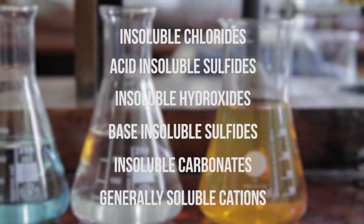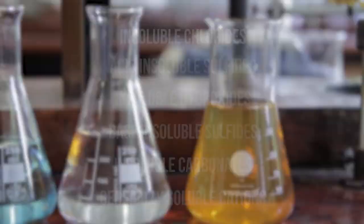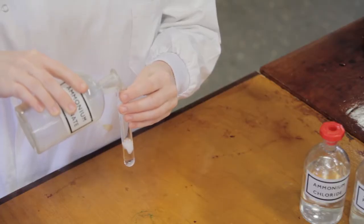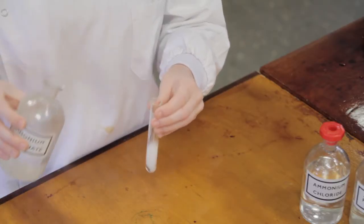Each group can be distinguished based on the reactions it undergoes. The individual cation can then be determined using confirmatory tests unique to that cation.